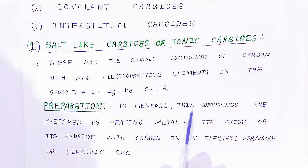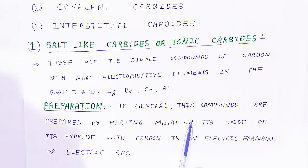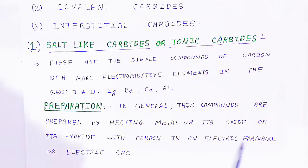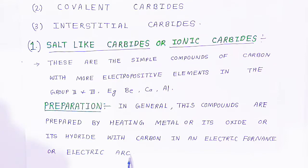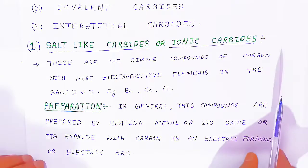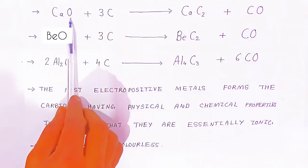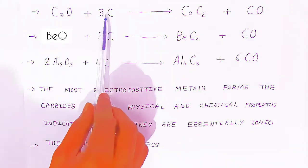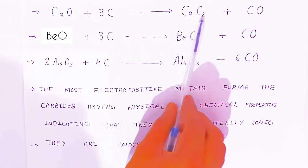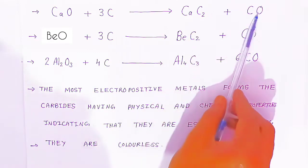In general, these compounds are prepared by heating a metal, its oxide, or its hydride with carbon in an electric furnace or electric arc. For example, calcium oxide reacts with carbon to form calcium carbide and carbon monoxide.